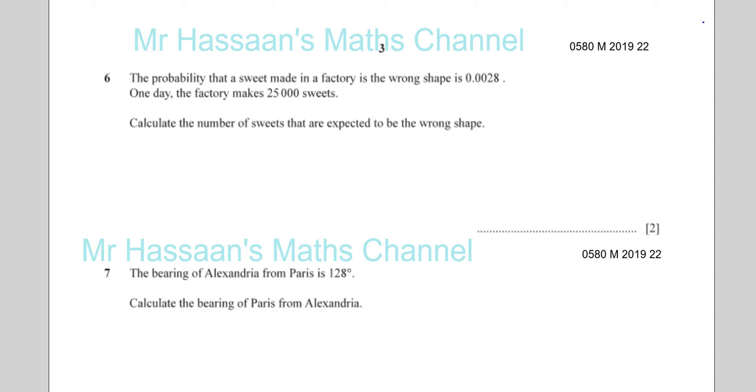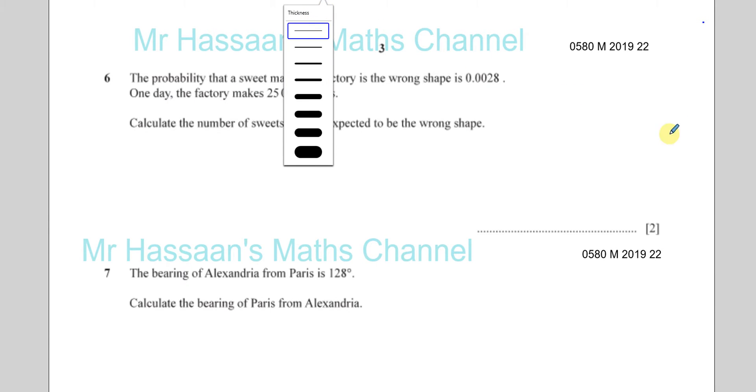This is the second page of the questions, and we're doing question number 6 right now. It says the probability that a sweet made in a factory is in the wrong shape is 0.0028.